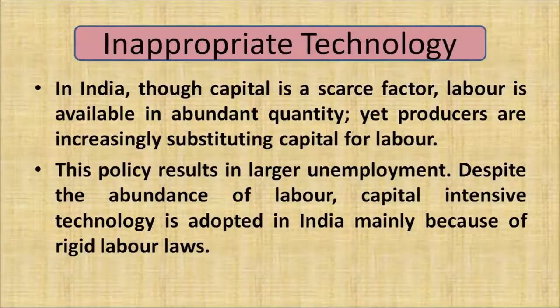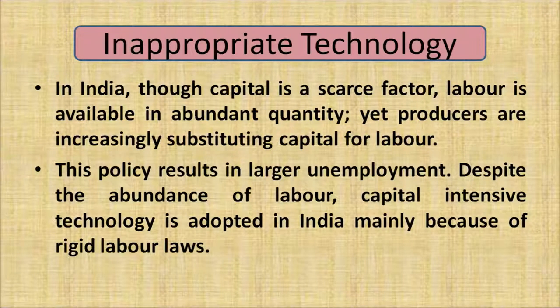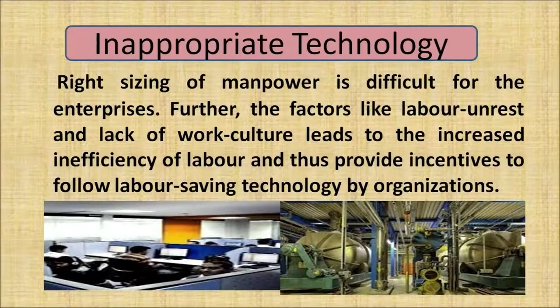Another reason for unemployment is inappropriate technology. In India, capital is a scarce resource but labour is available in abundance. Yet producers and manufacturers are increasing the use of capital over labour. This results in larger unemployment. Despite the abundance of labour, capital-intensive technology is adopted mainly because of rigid labour laws, making right-sizing of manpower difficult for enterprises. Further, labour unrest and lack of work culture lead to increased inefficiency of labour, providing incentives to organisations to follow labour-saving technology.